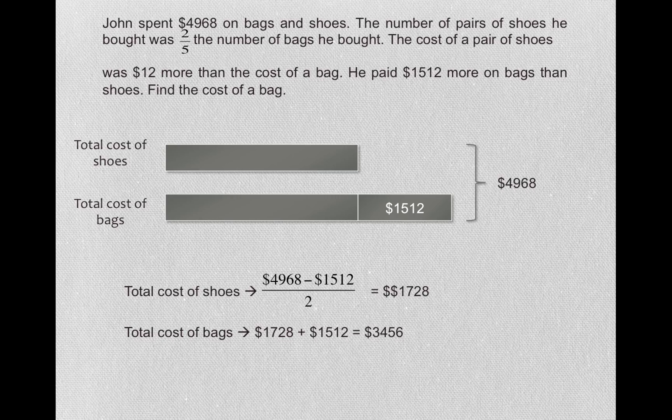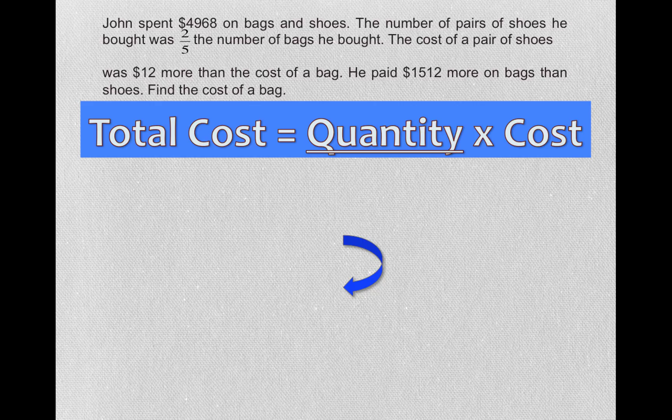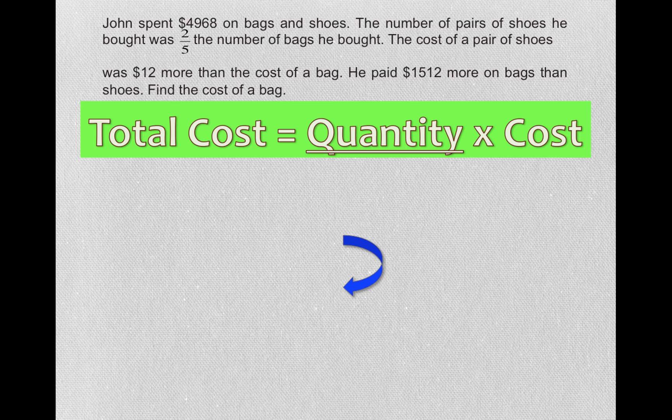The next thing to bear in mind is what is the total cost? Total cost is made out of two things: total cost equals quantity times cost. Here in these two items, we have different quantity, we have different cost, so we cannot just tell what is the difference due to.